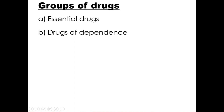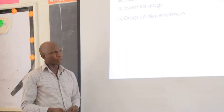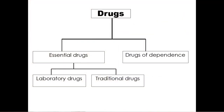These drugs are classified into two groups. They are either going to be essential drugs or drugs of dependency — sometimes called narcotic drugs. So there are two groups: essential drugs or drugs of dependency. Essential drugs are further grouped into two: they are either going to be laboratory drugs or traditional drugs. That's why you saw those plant things — some drugs are traditional.